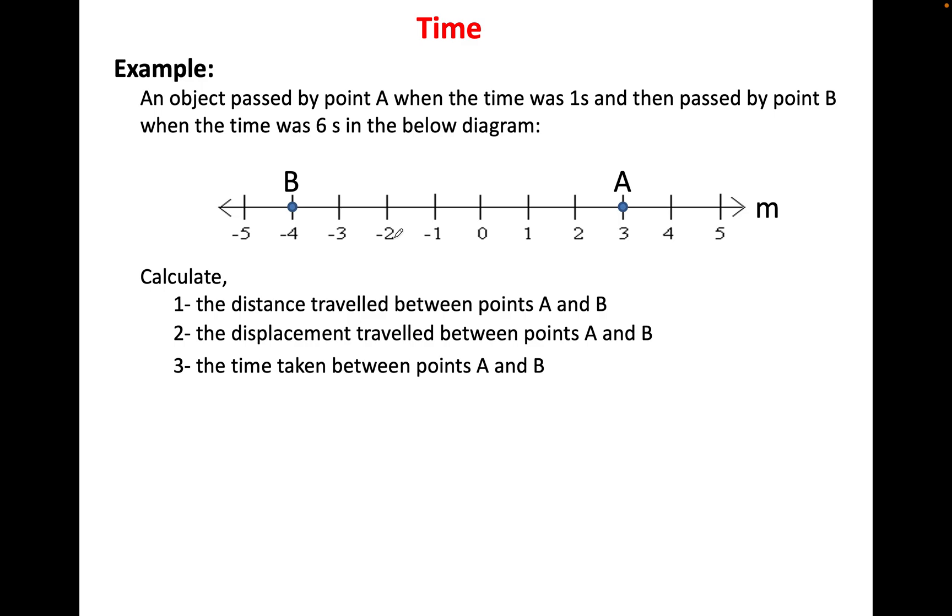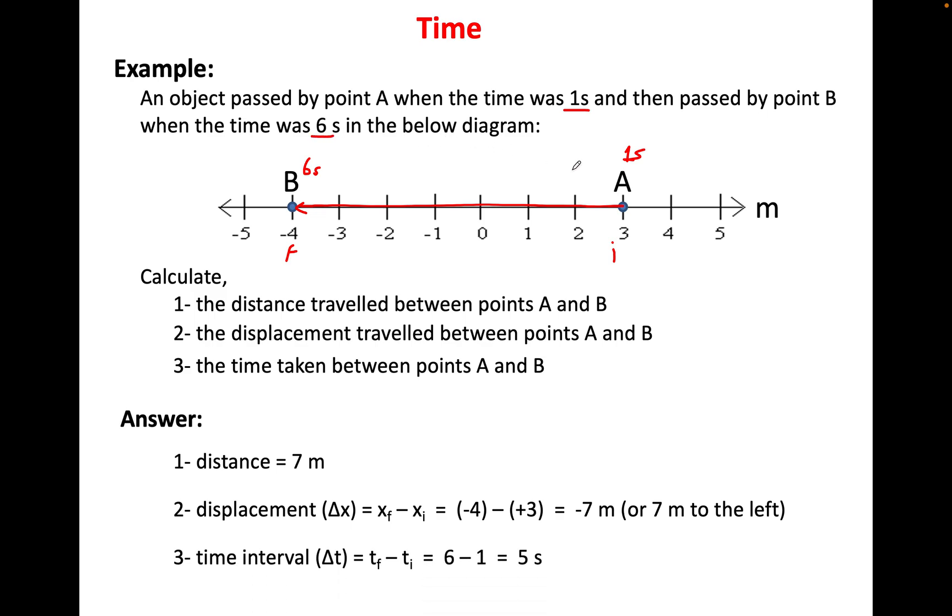Quick example. Find the distance. Find the displacement. Find the time. The distance. Well, you can count the steps. You can see that this was all the way here was 7 meters. All the way from here to here was 7 meters. Displacement. Final minus initial. If you don't want to sit here and count, no problem. I could do final minus initial. Xf minus xi. Minus 4 minus 3 equals minus 7. Or 7 meters to the left. Here the time was 1 second. Here the time was 6 seconds. How do I know? I hear you ask. Because it tells me right here on the question. So you will do final minus initial. 6 minus 1. 5 seconds. Easy. Done.